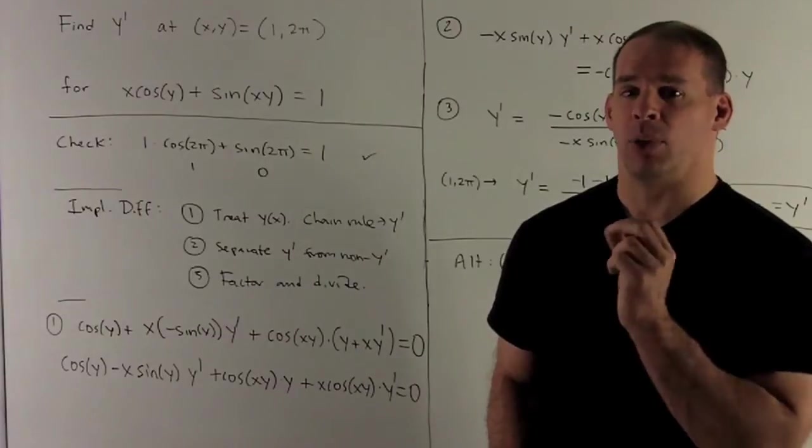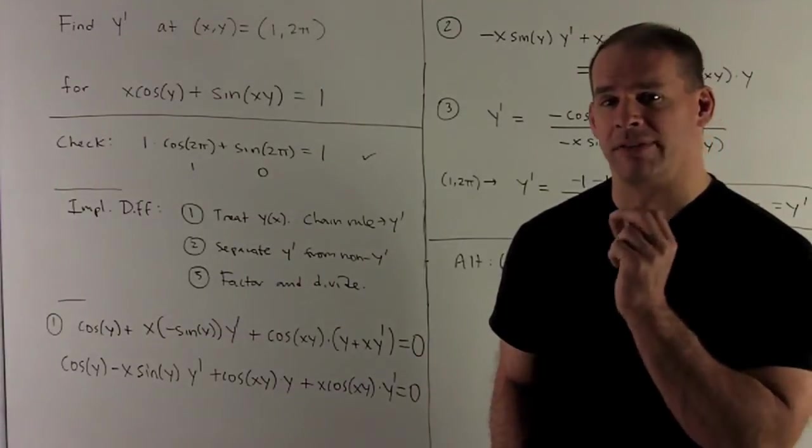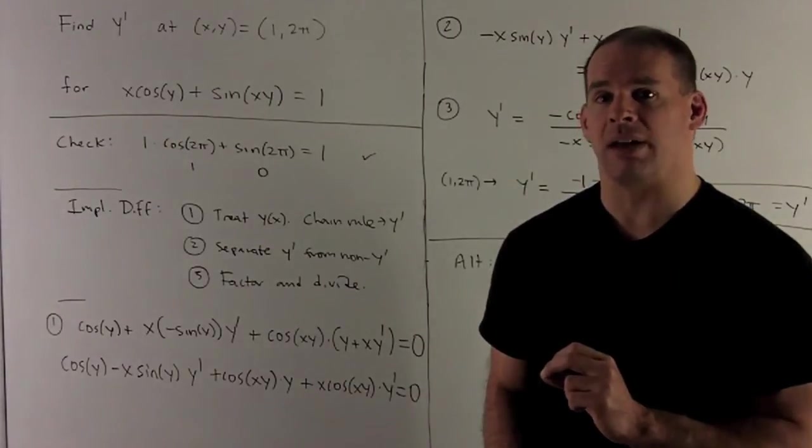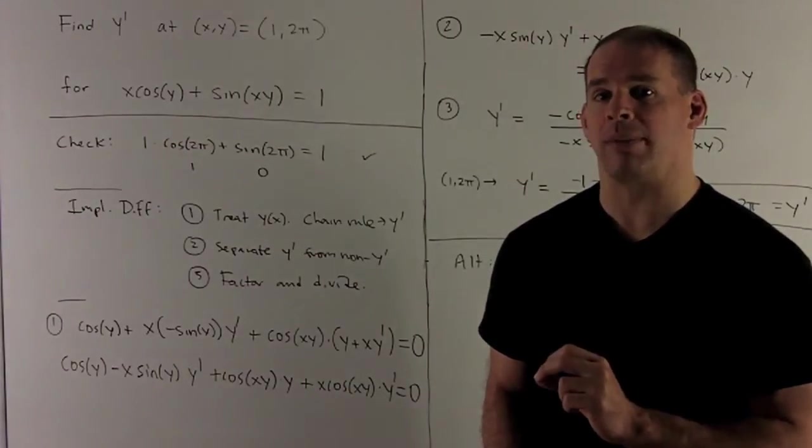It's a minus sine. I put the y back in, and then I have to take the derivative of y, which is just y prime. We don't know what that is. That's what we're trying to solve for. So we just leave it as y prime for now.